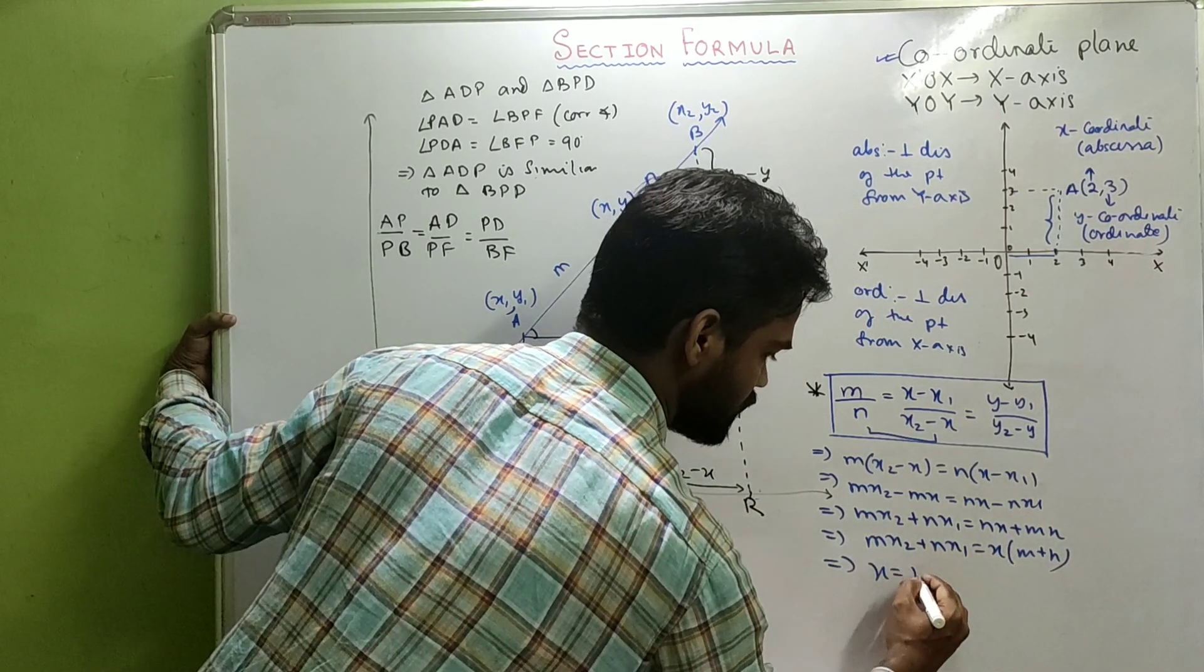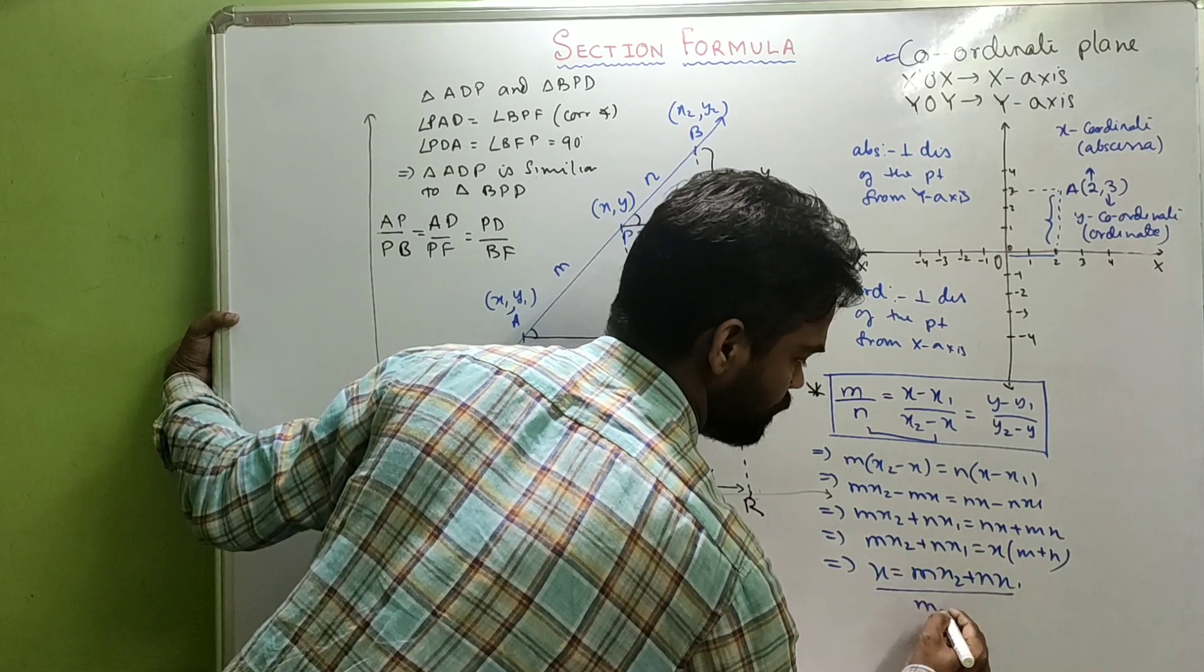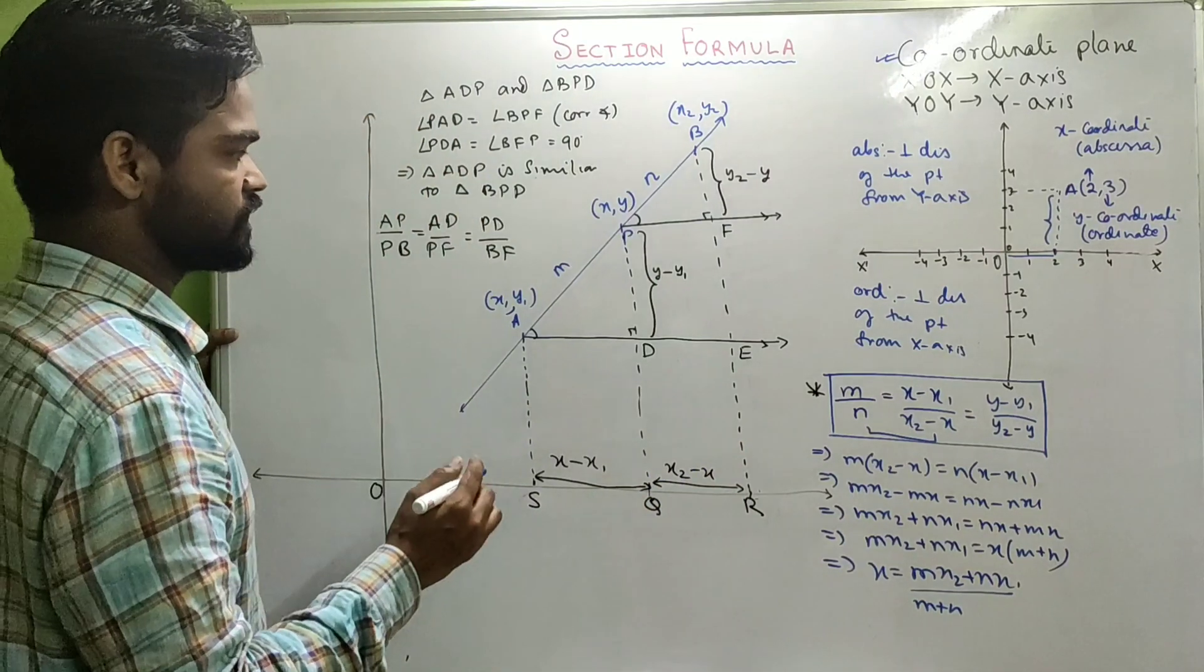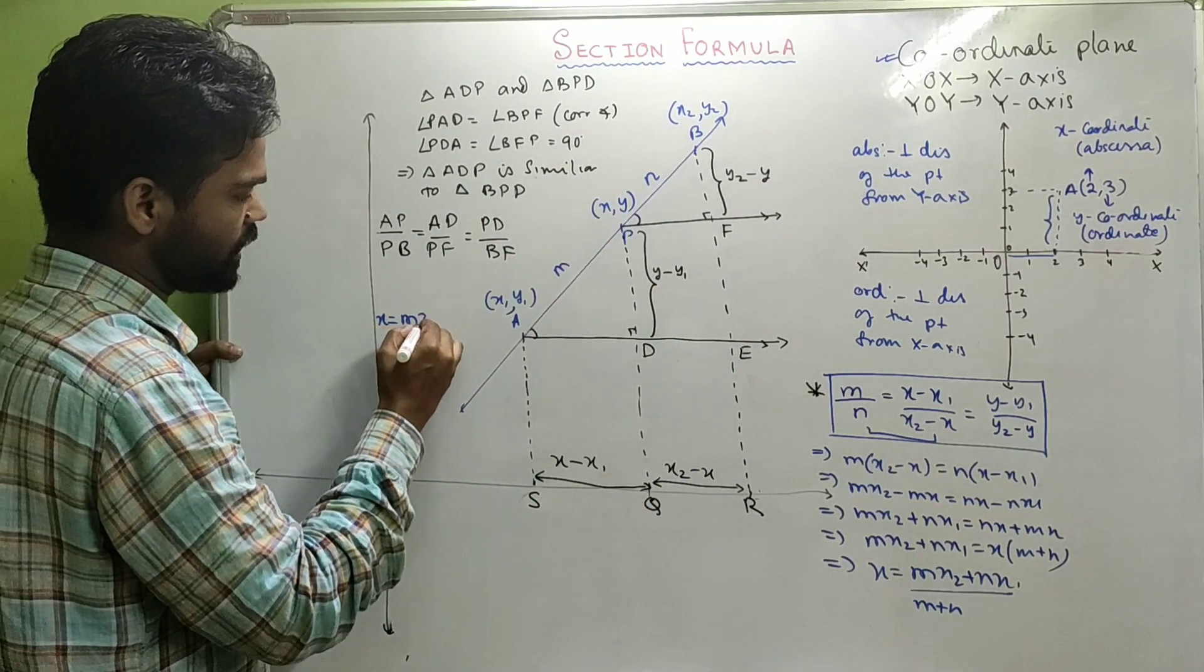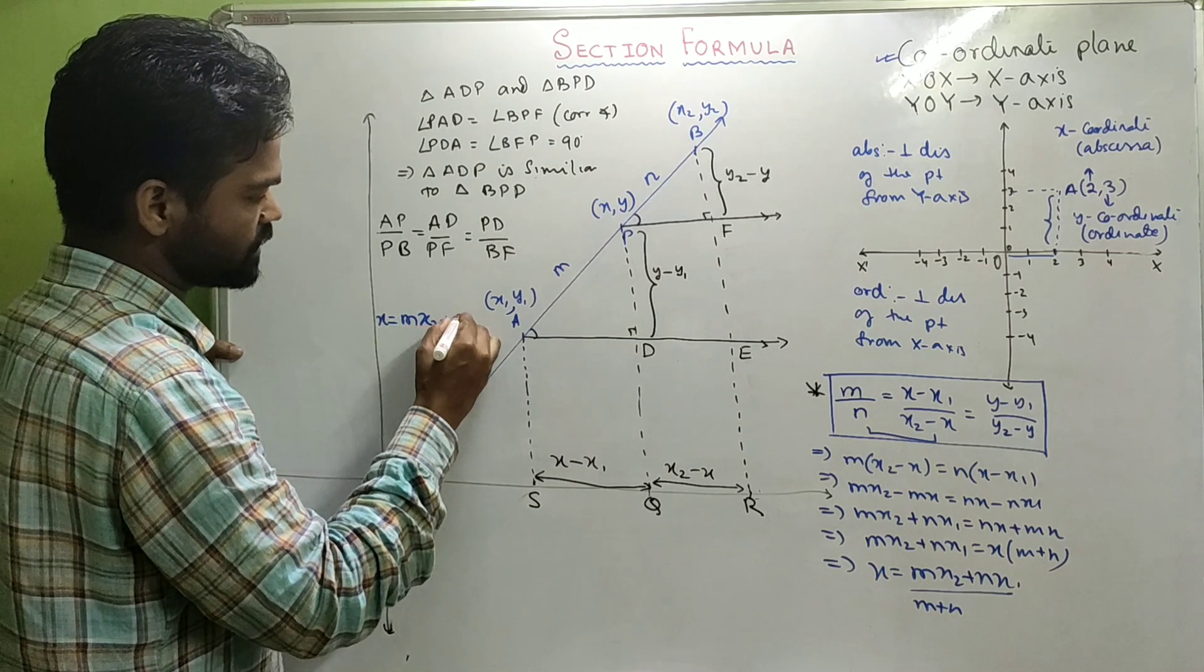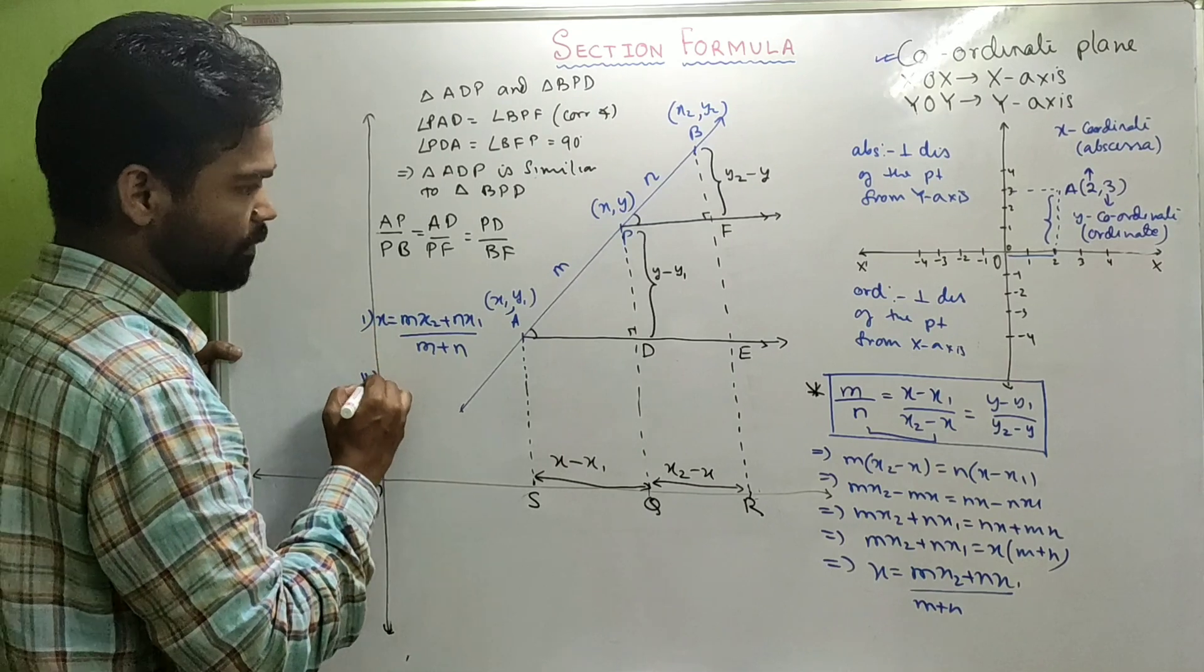Which means X will be MX2 plus NX1 by M plus N.